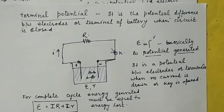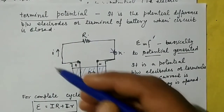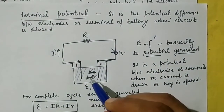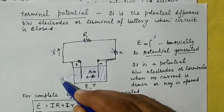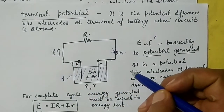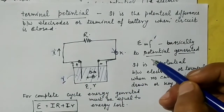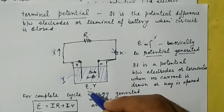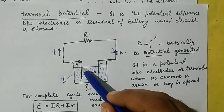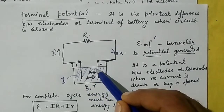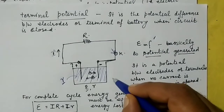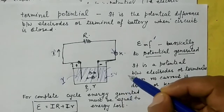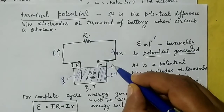When we close the key, we have a current I flowing. The cell has an internal resistance r due to the movement of ions in the electrolyte. If the cell's maximum potential — EMF — is E, then some potential is consumed or dropped across the internal resistance. For example, if this cell's EMF is 5 volts and because of the internal resistance the potential drop inside is 1 volt, then the potential available to the outside circuit is 4 volts.